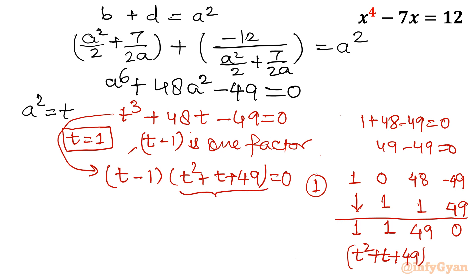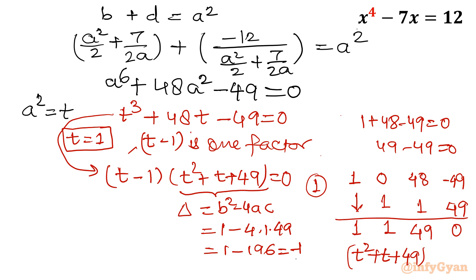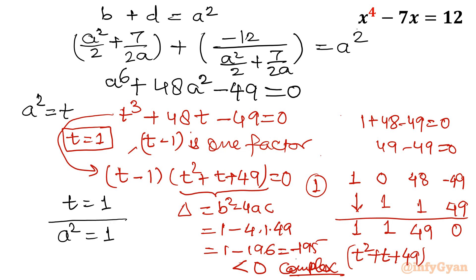Checking the discriminant of t² + t + 49: Δ = b² - 4ac = 1 - 4(1)(49) = 1 - 196 = -195, which is negative. So t² + t + 49 gives complex solutions only. Therefore t = 1, which means a² = 1, giving two values: a = +1 and a = -1.